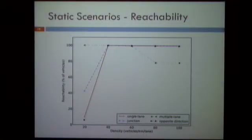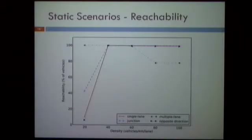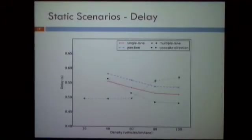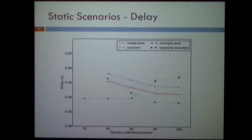The first result is reachability — the number of vehicles that received information from one end to the other of a five-kilometer road. We have results for a single lane, a junction, multiple lanes, and roads with opposite direction. Generally, with higher density we have a better-connected network and reachability near 100%, with the exception of the multiple-lane scenarios, which had more collisions due to the higher number of vehicles assigned to a single time slot. For delay, it generally decreases with a better-connected network, and importantly, for all scenarios on the five-kilometer road, the delay was less than 0.6 seconds.